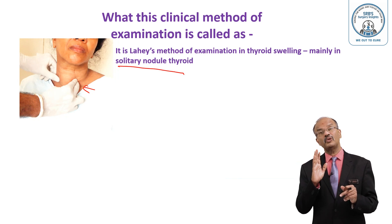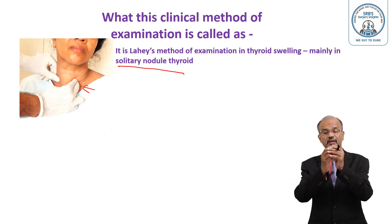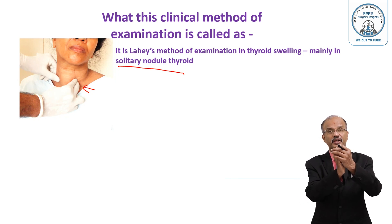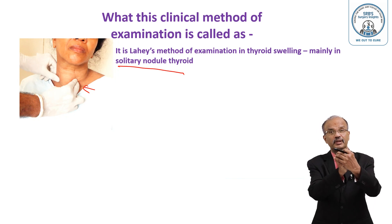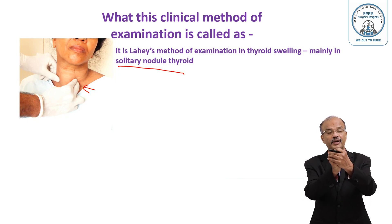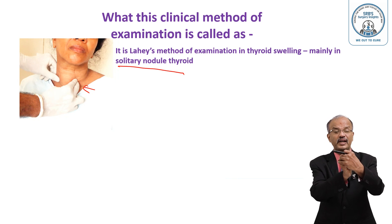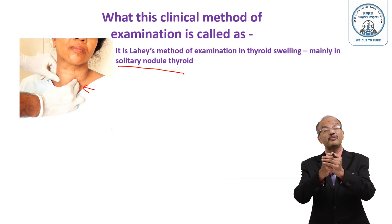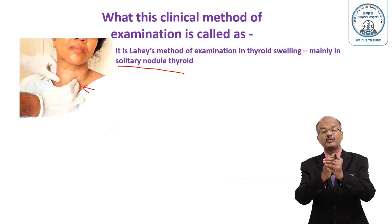When you push the opposite lateral lobe, the thyroid rotates because the trachea is cylindrical — so when you push it, it rotates. The principle is that the opposite lateral lobe's posterior part becomes posterolateral, so you will be able to feel the posterior part of the gland by this Lahey's method of examination.